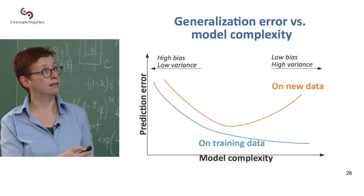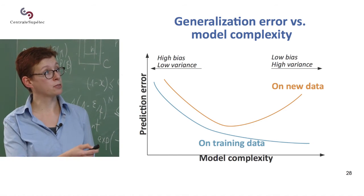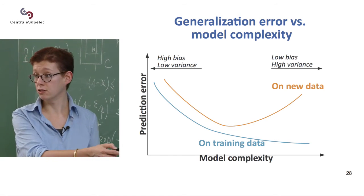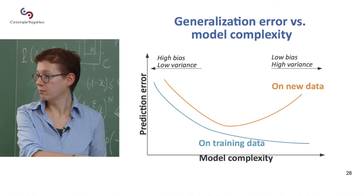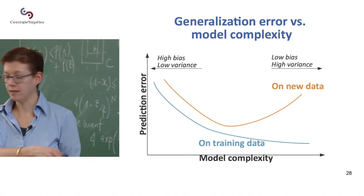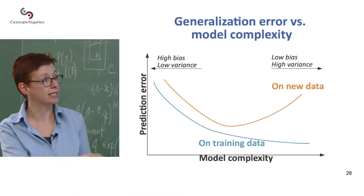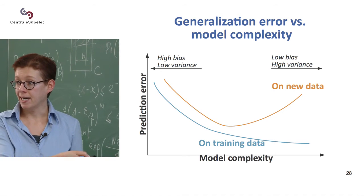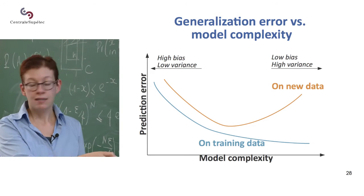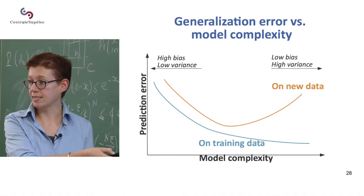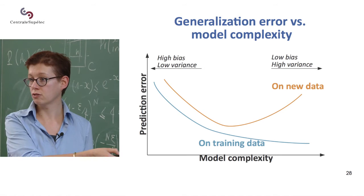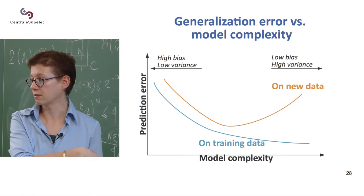So you'll see that what you're interested in is, of course, the prediction error on new data. You already know the labels on your training data. So a lot of what we'll be doing is trying to find this point here, where your model is complex enough that it explains new data well, but not so complex that it actually only works on the training data.